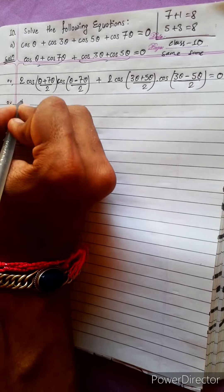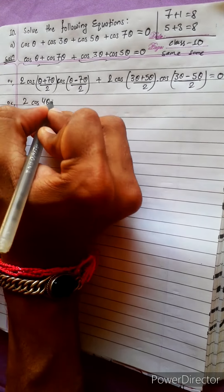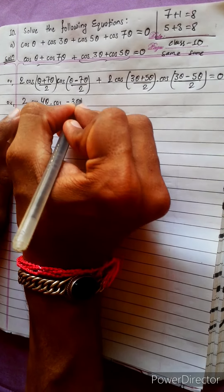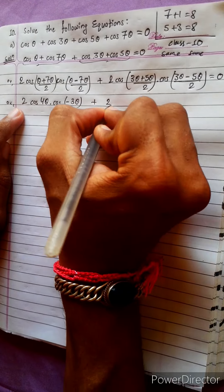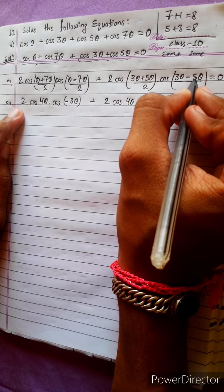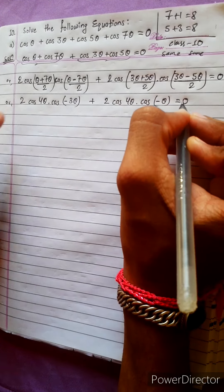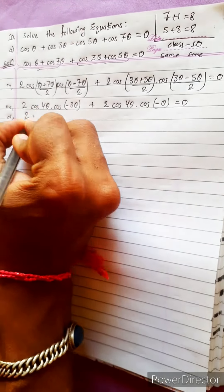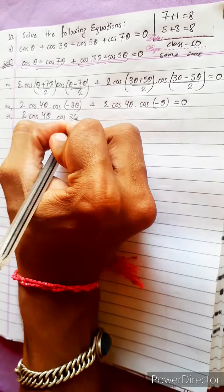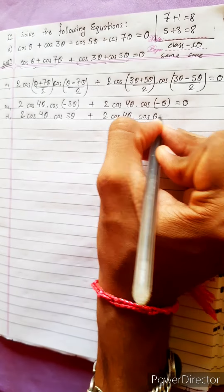After this, 7 plus 1 is 8, so 8 by 2 gives cos 4θ directly. The other term is 6 divided by 2, which is minus 3θ. For the second group, 8 gives 4θ directly, and minus 2 divided by 2 is minus θ. Now cos(−θ) = cos θ. So we get 2cos(4θ)·cos(3θ) plus 2cos(4θ)·cos(θ) equals 0.